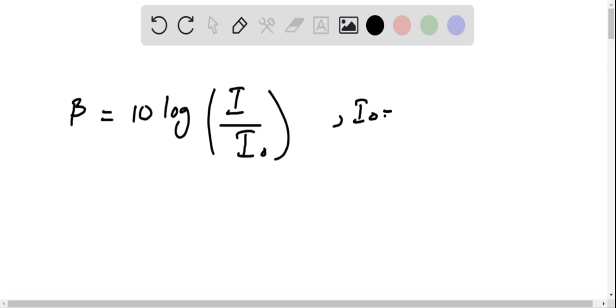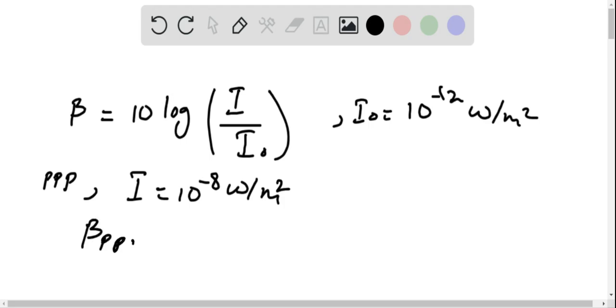where I₀ is 10^-12 watts per meter squared. The intensity level for PPP sound can be calculated by substituting the intensity I, which is 10^-8 watts per meter squared. So beta PPP is 40 decibels.